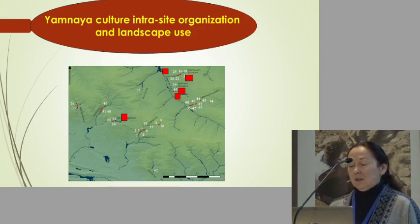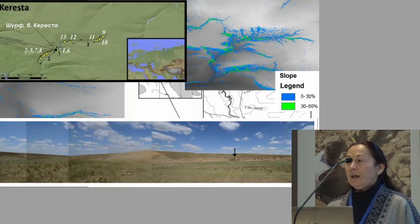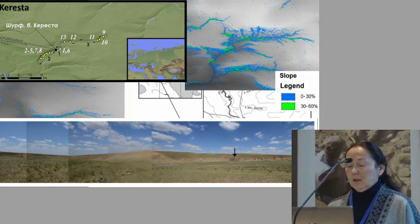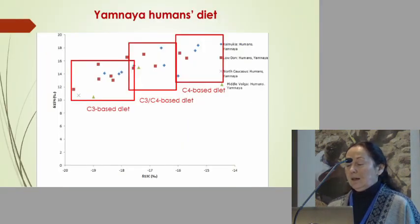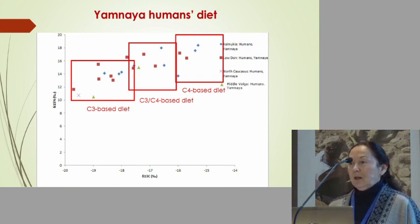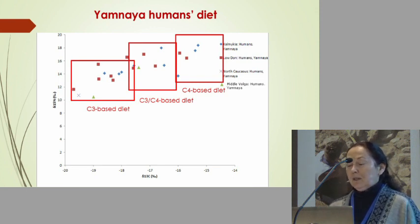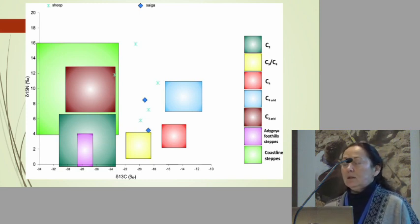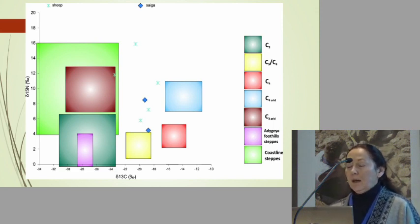Yamna culture — the famous Yamna culture. We have hundreds and thousands of graves of Yamna culture, and recently we were able to uncover seasonal Yamna culture sites. When we look at the Yamna diet, you can see quite a lot of variations — some Yamna people's diet was C4-based, some mixed C3/C4, and some C3-based. So those Yamna people consumed different food components with different isotope values. The same could be said about the animals — those Yamna animals were pastured in different pastures.